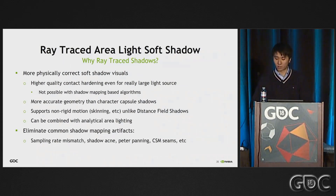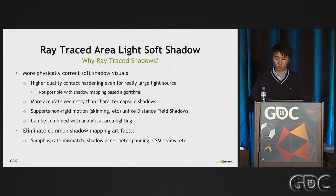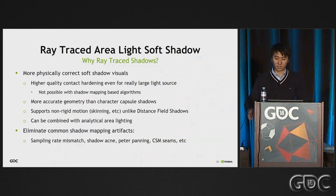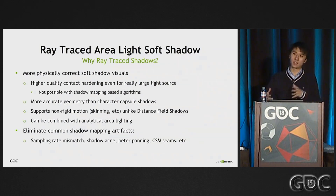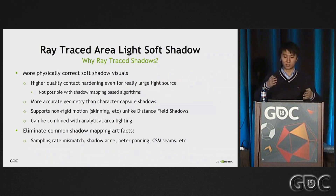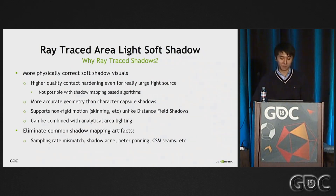On the content creation and productivity side, nobody likes shadow maps. Tuning them to work robustly is always a time-consuming task. You have to constantly fight the fact that the shadow map sampling rate is mismatching from the raster sampling rate. So maybe soon we can get rid of it.